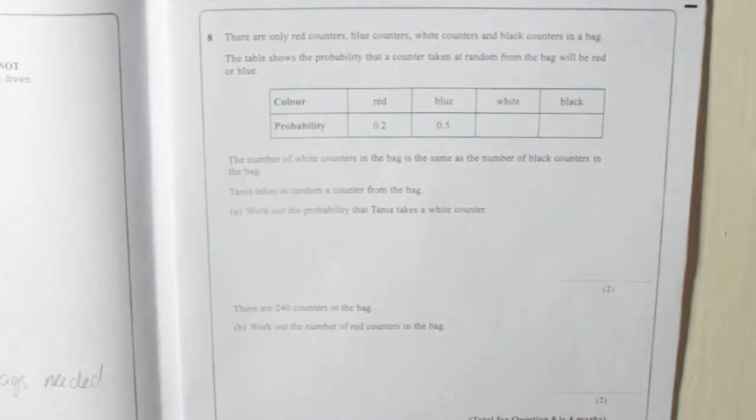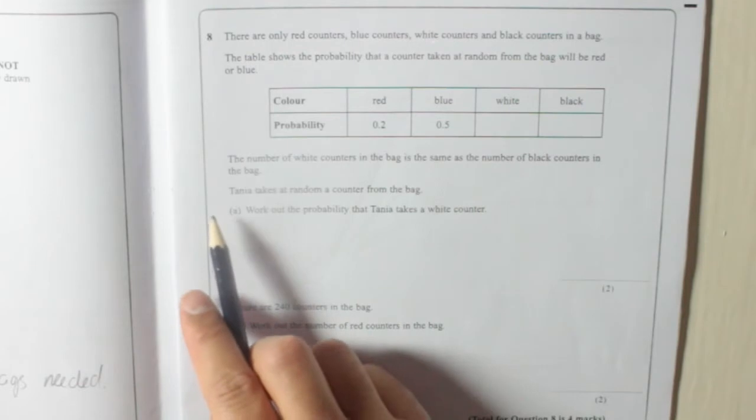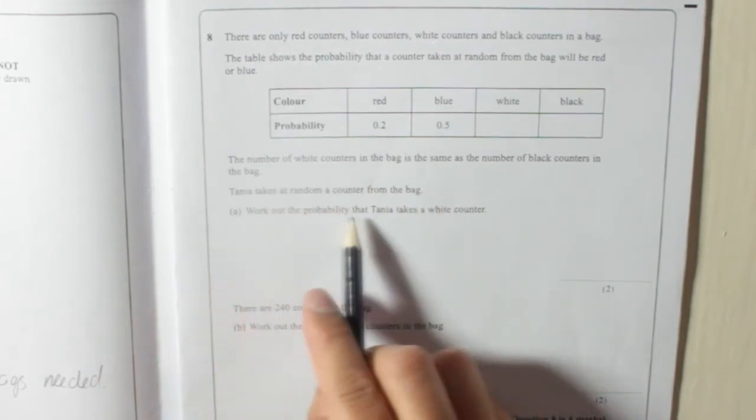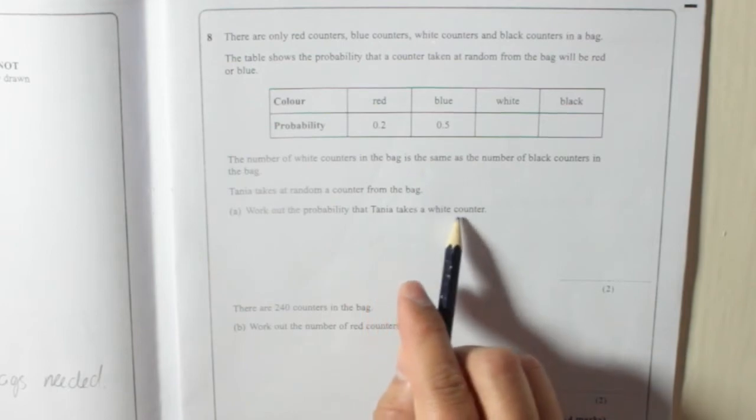Question 8. There are only red counters, blue counters, white counters and black counters in a bag. The table shows the probability that a counter taken at random from the bag will be red or blue. The number of white counters in the bag is the same as the number of black counters in the bag. So white and black are the same. Tanya takes a random counter from the bag. Work out the probability that Tanya takes a white counter.